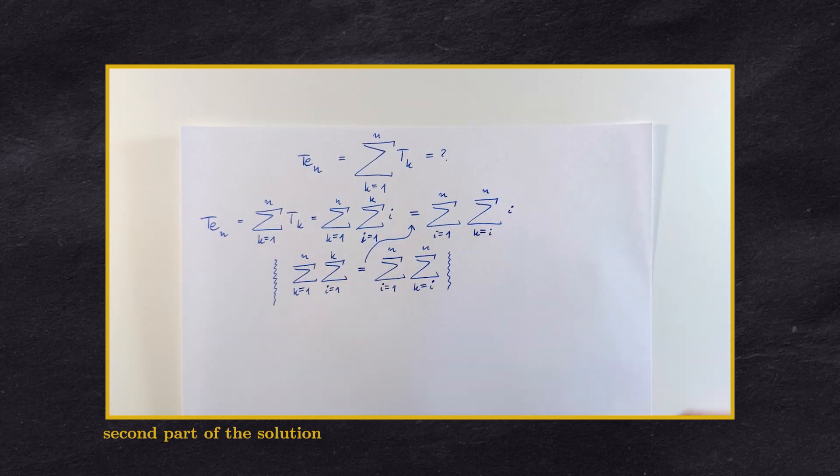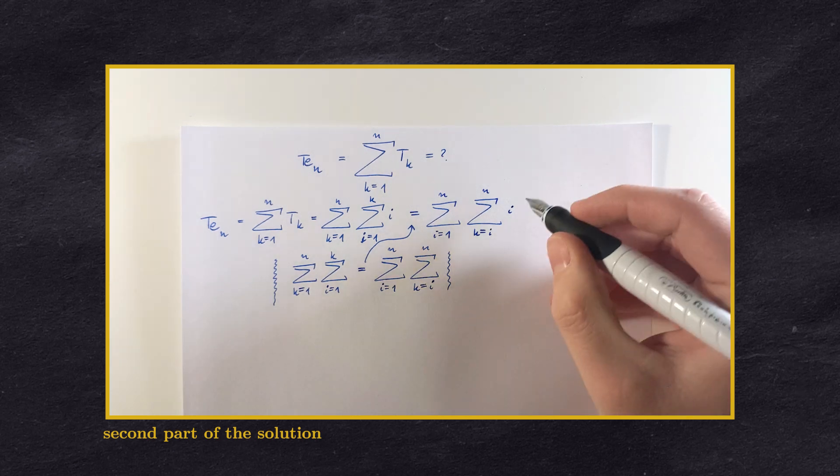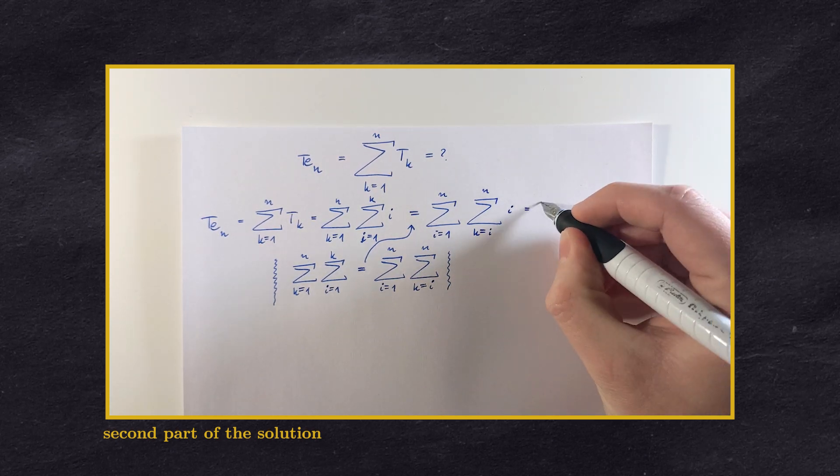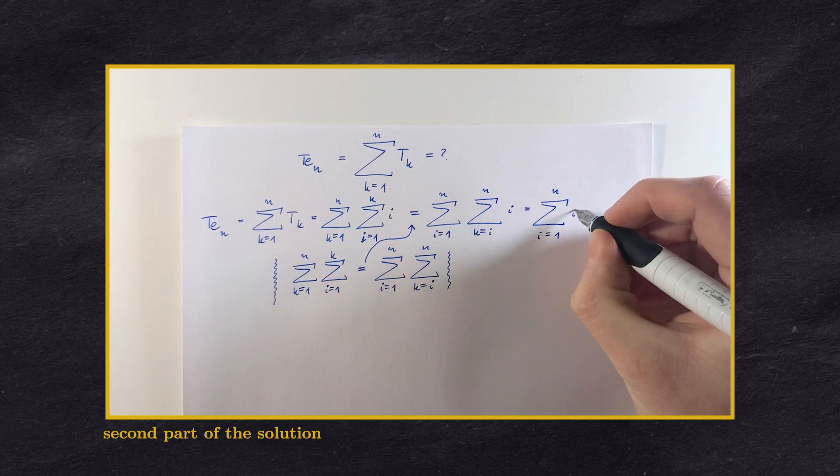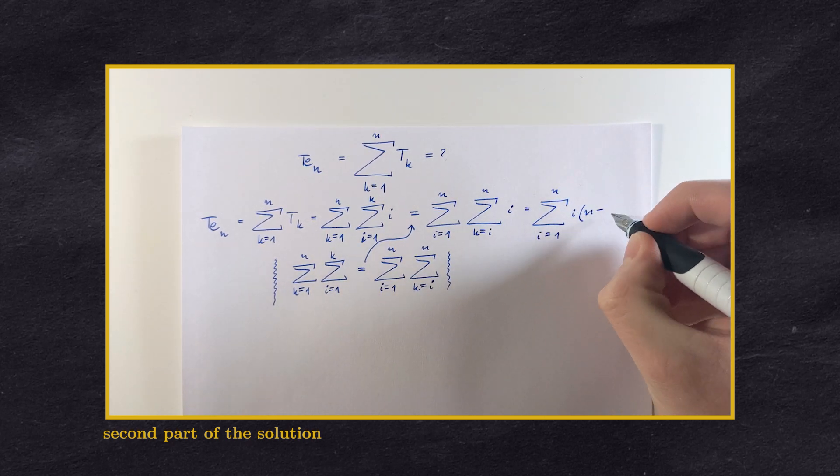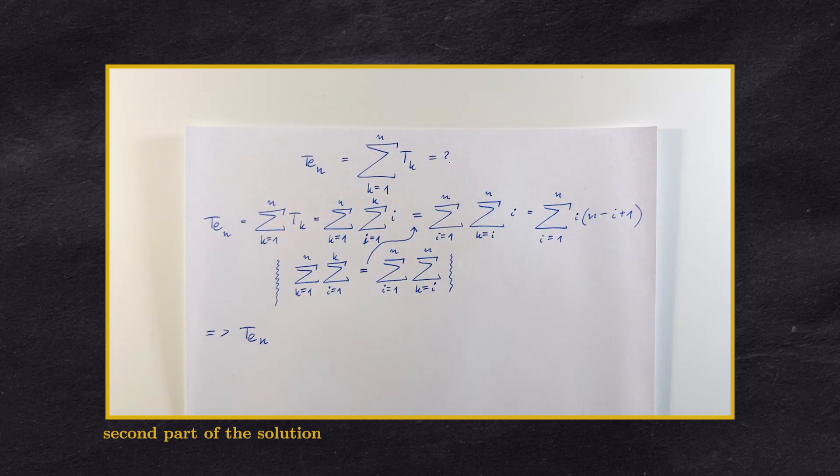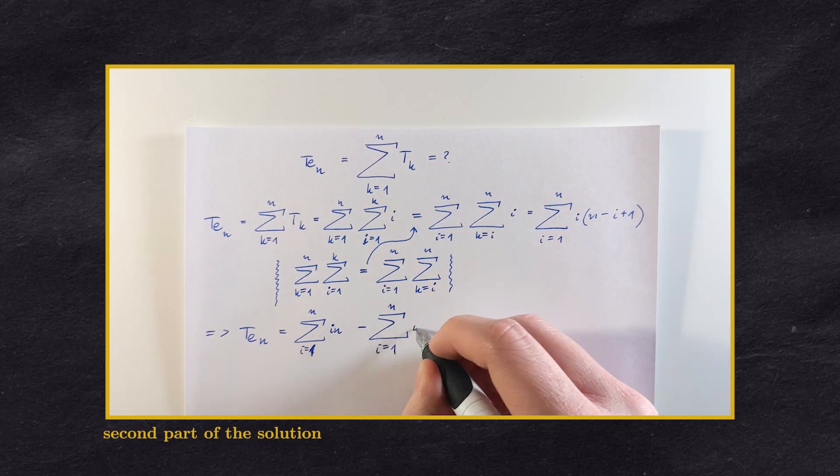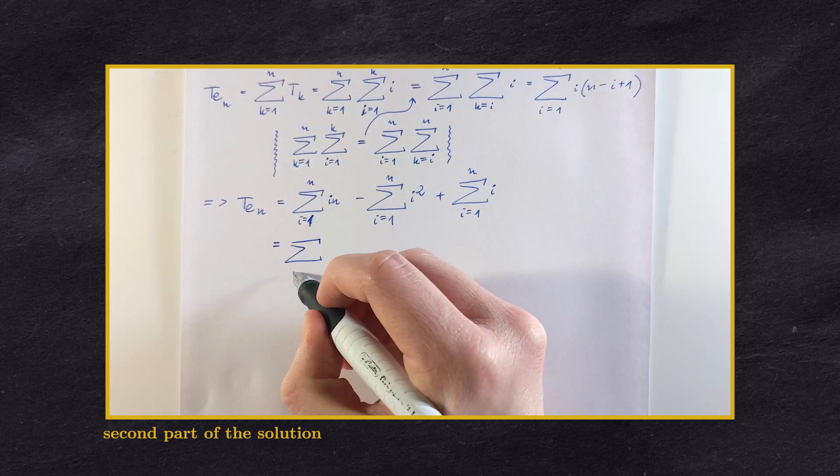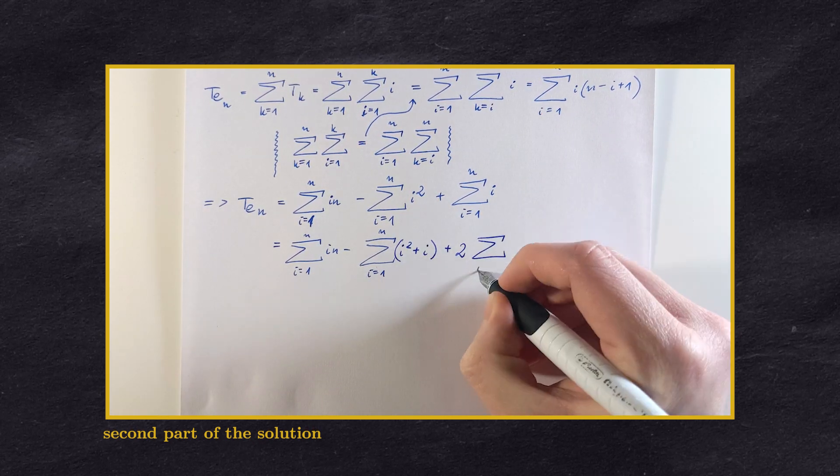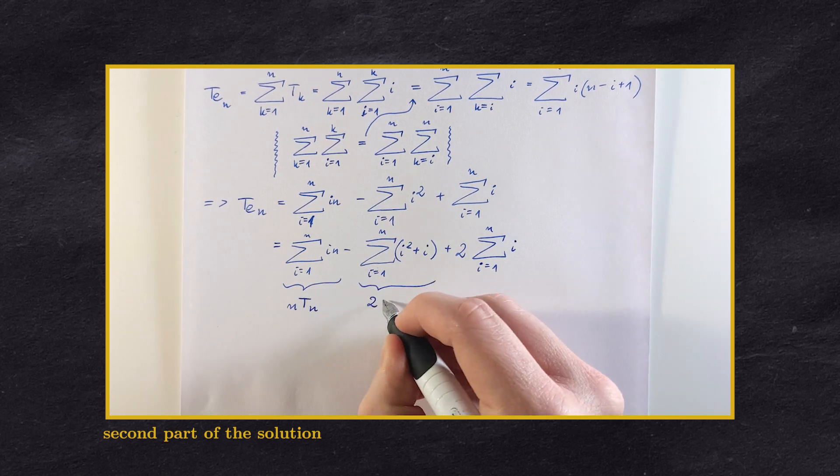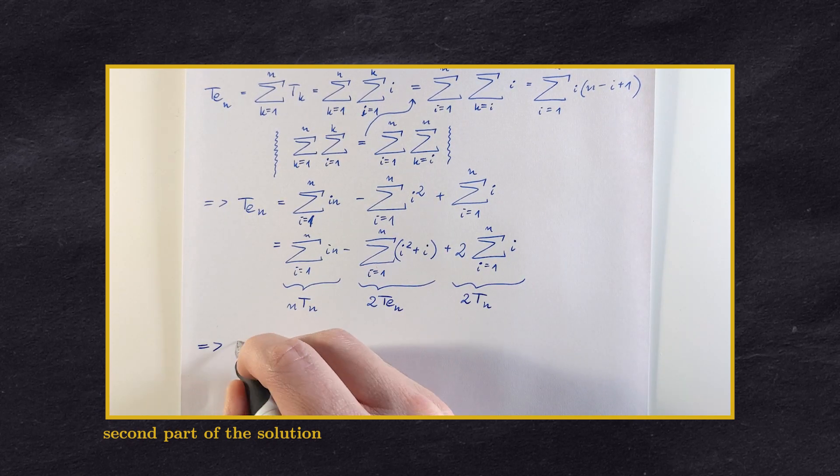Now notice that this i does not depend on the index from the second sum. Therefore, the second sum is equal to i times the number of indexes, which is n minus i plus 1. Now we split the sum into 3, add 1 to the i squared one, so that we get the tetrahedral numbers, and here you go. The formula emerges.